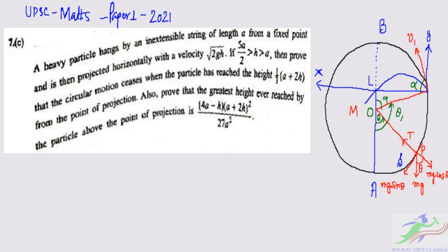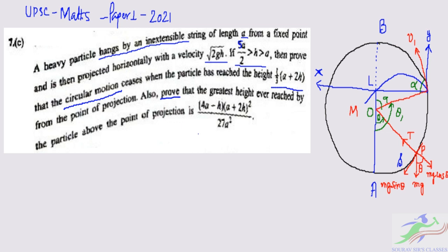The question states: a heavy particle hangs by an inextensible string of length A from a fixed point and is then projected horizontally with a velocity of √(2gH). Now if 5A/2 > H > A, then prove that the circular motion ceases when the particle has reached a height of (1/3)(A + 2H) above the point of projection. Also prove that the greatest height reached by the particle above the point of projection is (4A − H)(A + 2H)² / 27A².